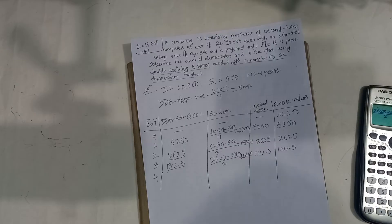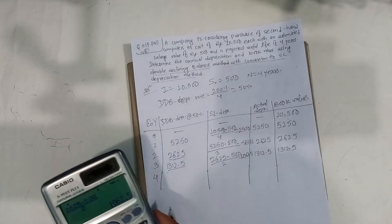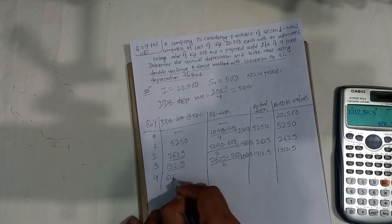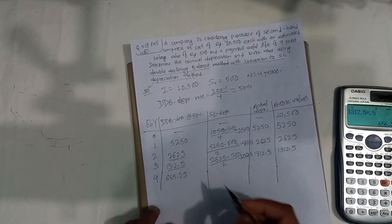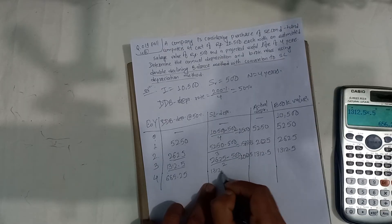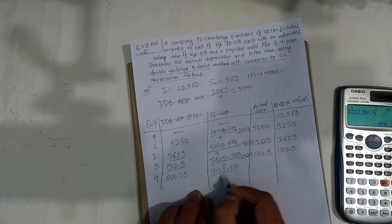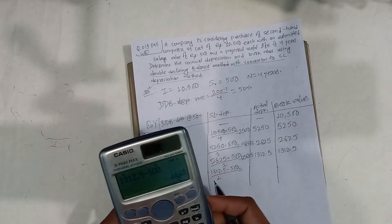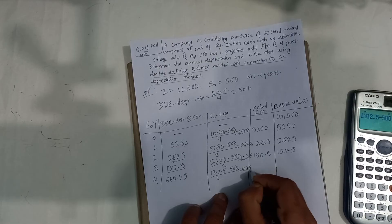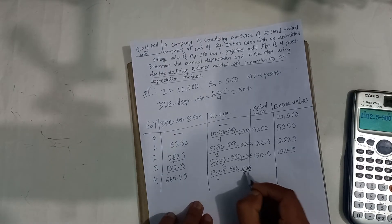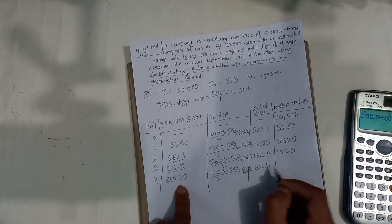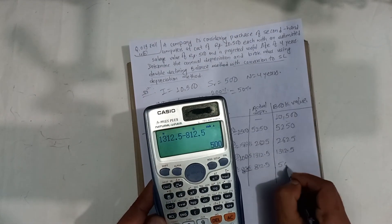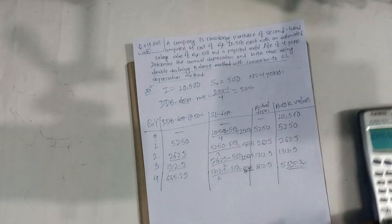Fourth year: 1,312.50 at 50% equals 656.25. And 1,312.50 minus 500 equals 812.50, which is equal to salvage value.